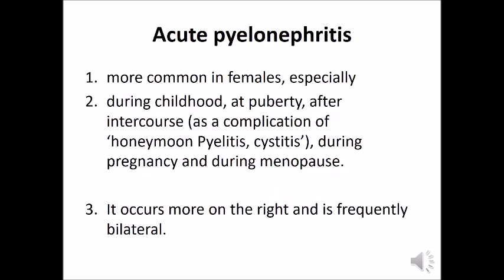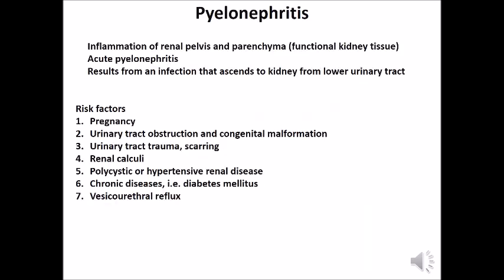Acute pyelonephritis is much more common in females, especially during childhood, at puberty, after intercourse, as a complication of honeymoon pyelitis or cystitis, during pregnancy, and during menopause. The bacterial flora in the vagina keeps on changing due to menarche, intercourse, pregnancy, and menopause, and therefore females are more susceptible to pyelonephritis.